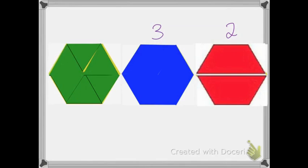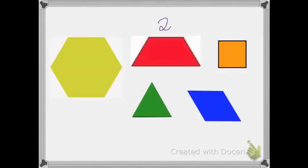It's not perfect, but you guys can get the gist. So six green triangles, three blue parallelograms, and two trapezoids cover that area of the hexagon.